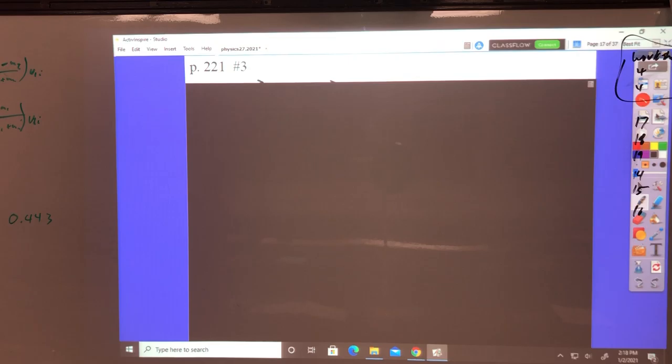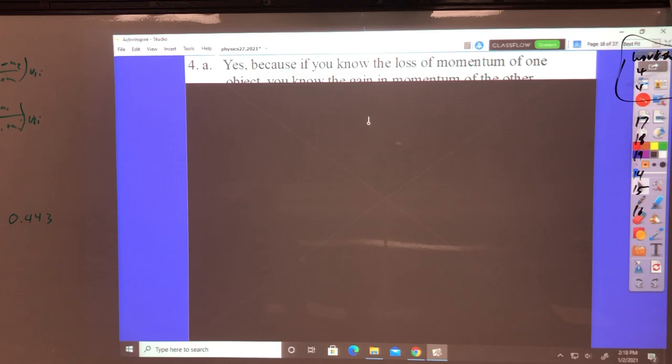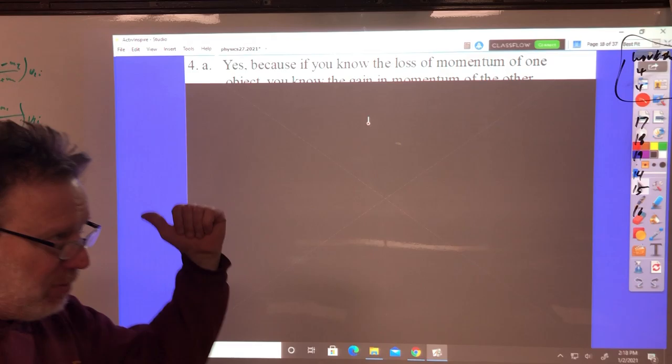Number four. We're not going to do part E on number four. I don't want to have to explain it at this point in this chapter. Two isolated objects have a head-on collision. Explain your answer. If you know the change in momentum of one object, can you find the change in the momentum of the other one? Sure. Any momentum lost by the first particle will be gained by the second, and vice versa.